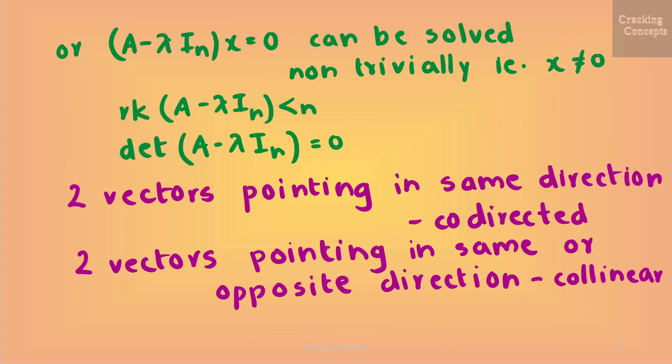Equivalently, (A − λI_n)x = 0 can be solved non-trivially in the case where x is not equal to 0. Also, rank of (A − λI_n) is less than n, and determinant of (A − λI_n) is equal to 0.